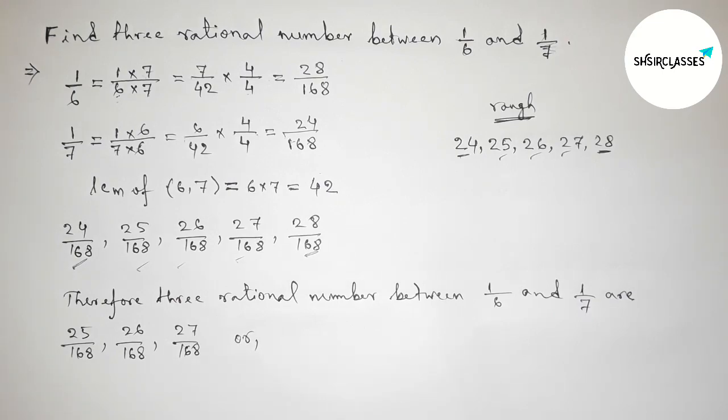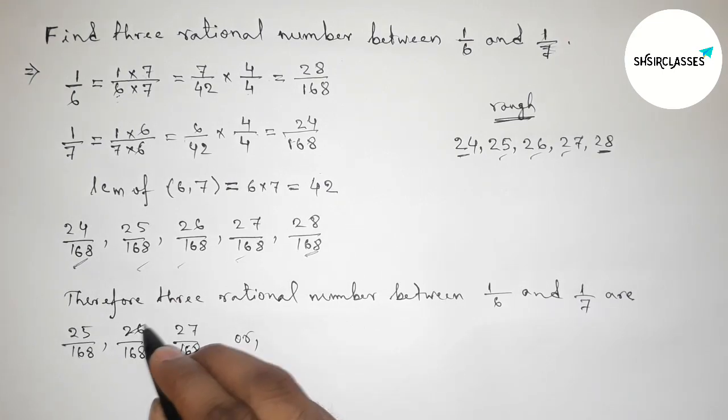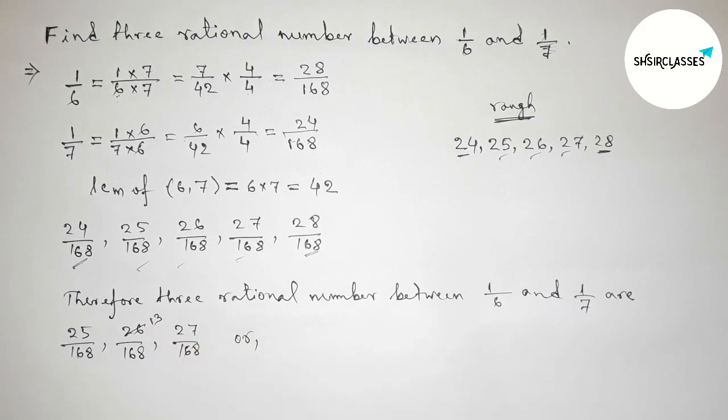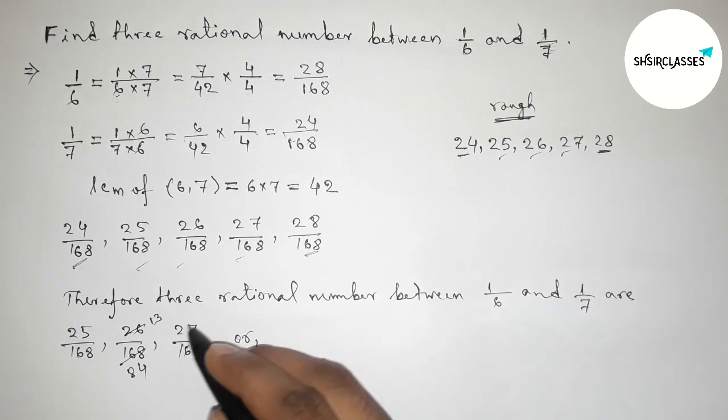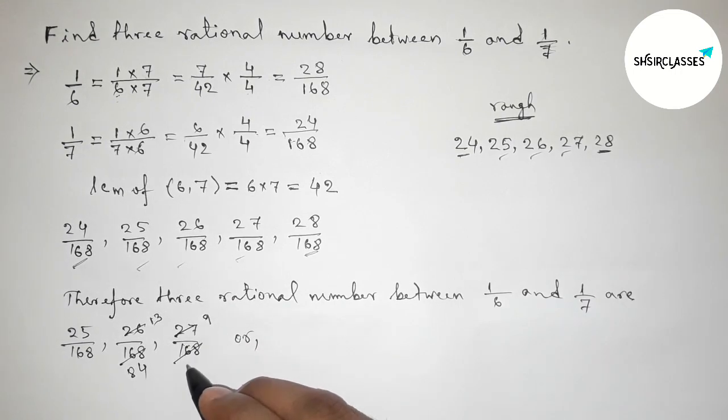Or we can write in simplified form. First dividing 26/168 by 2, so 13/84. Again dividing 27/168 by 3, so 9/56. And dividing 25/168 by—so write down here all the rational numbers: 25/168, then 13/84, and 9/56.